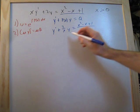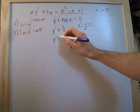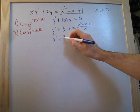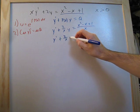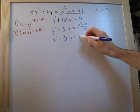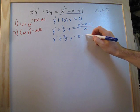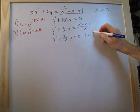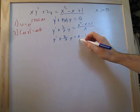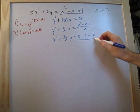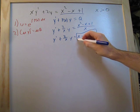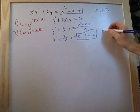We can simplify that a little further. Now we have y prime plus 2 over x times y is equal to x minus 1 plus 1 over x. All of this on the right side is going to be equal to q.